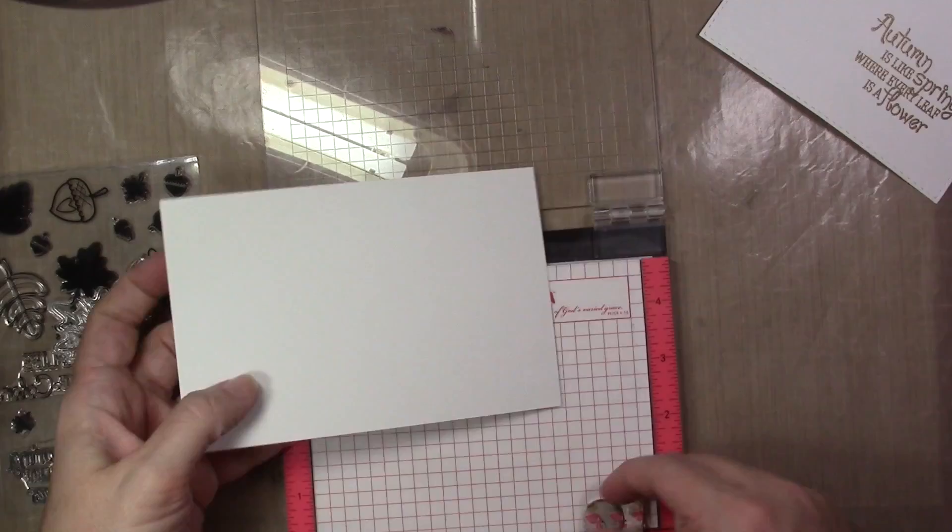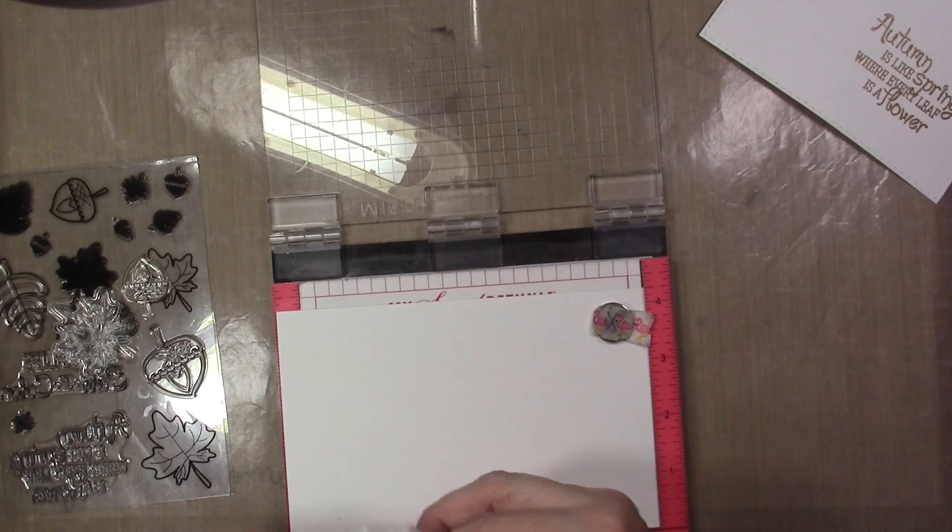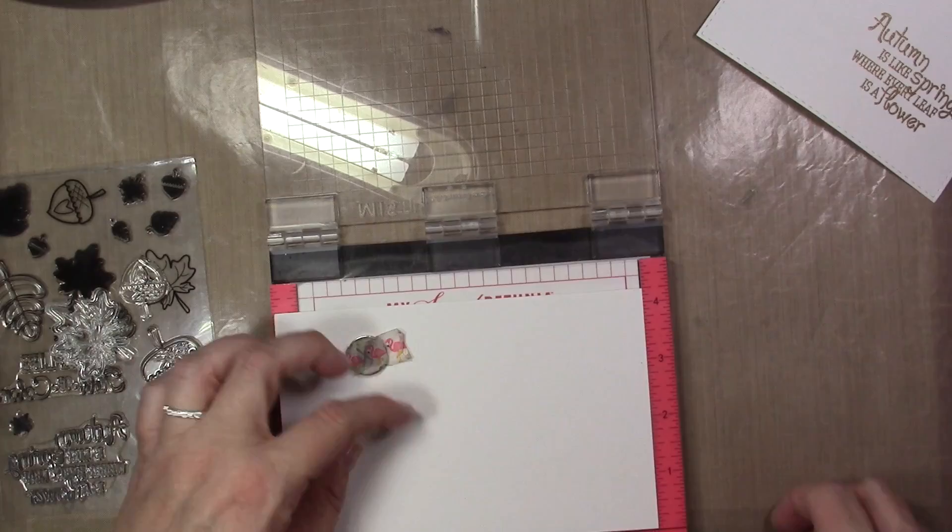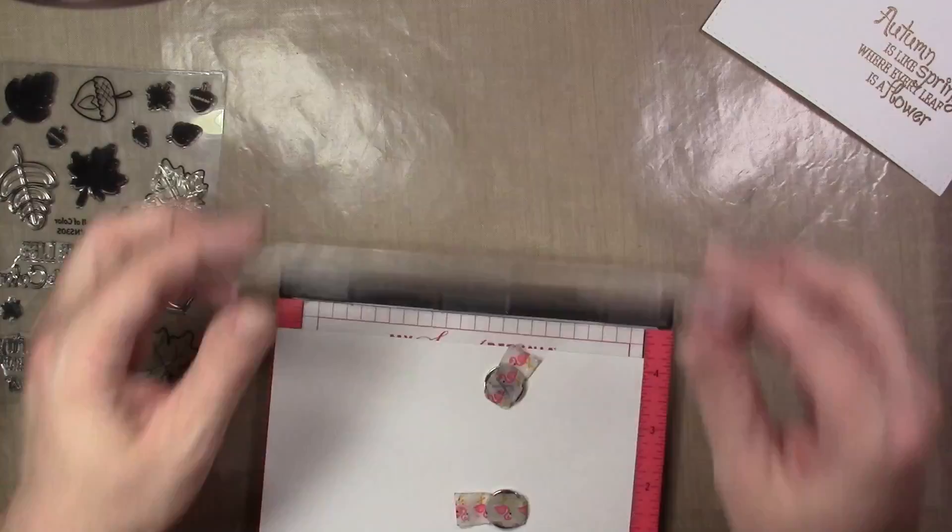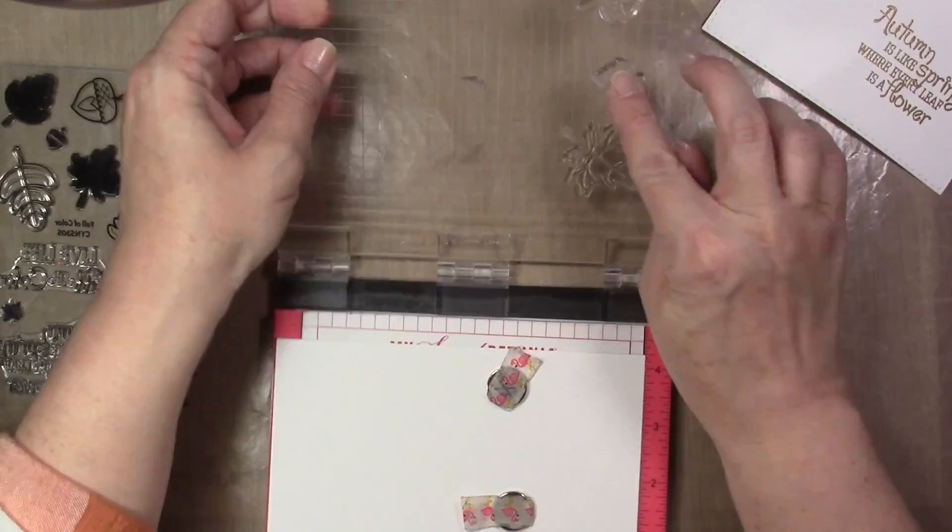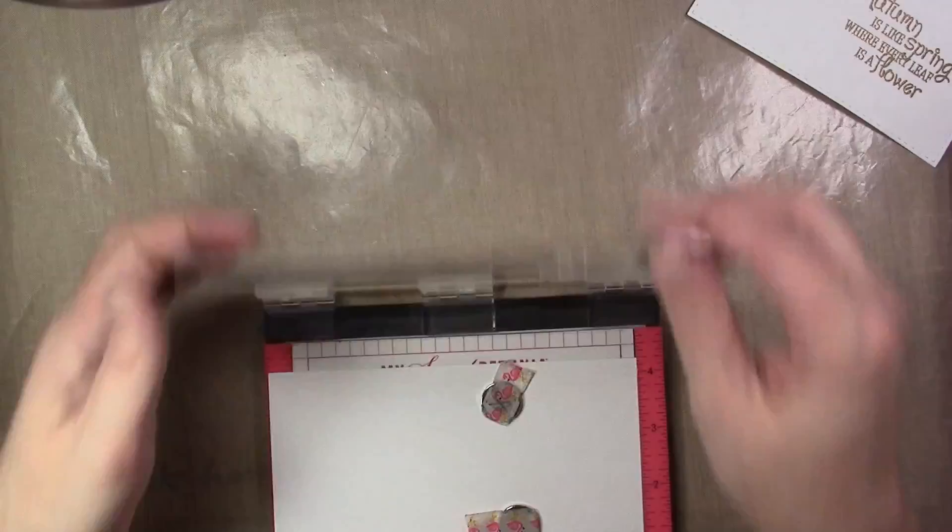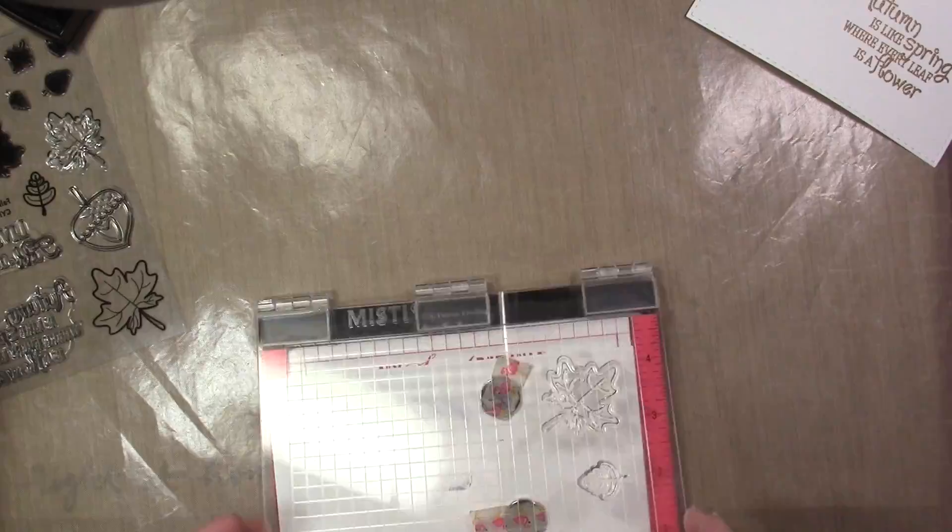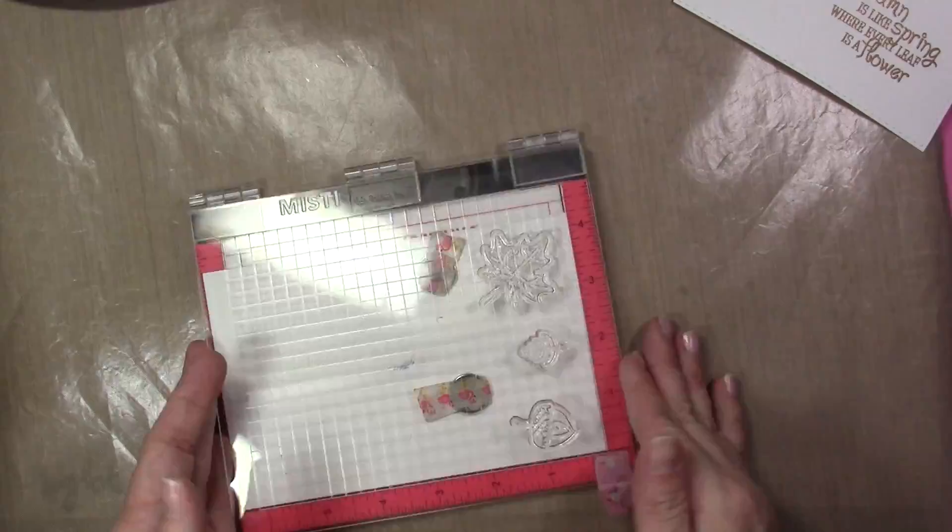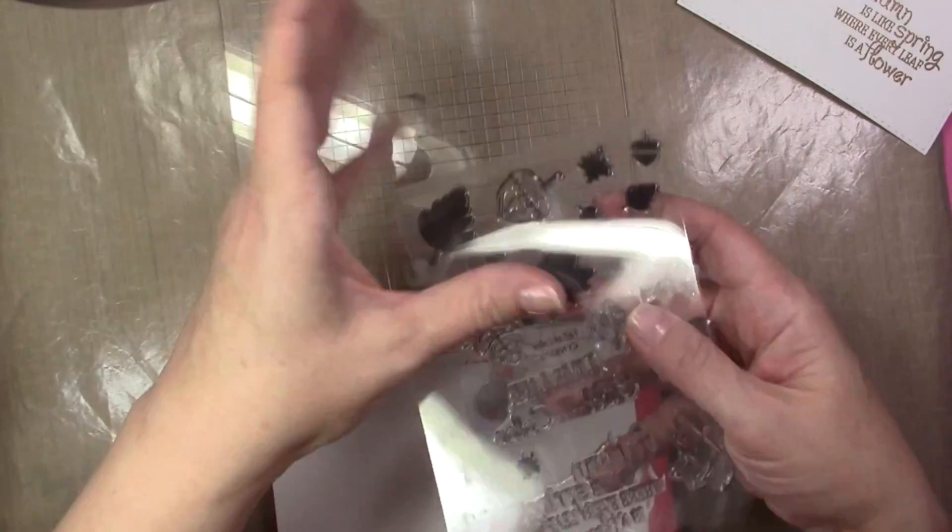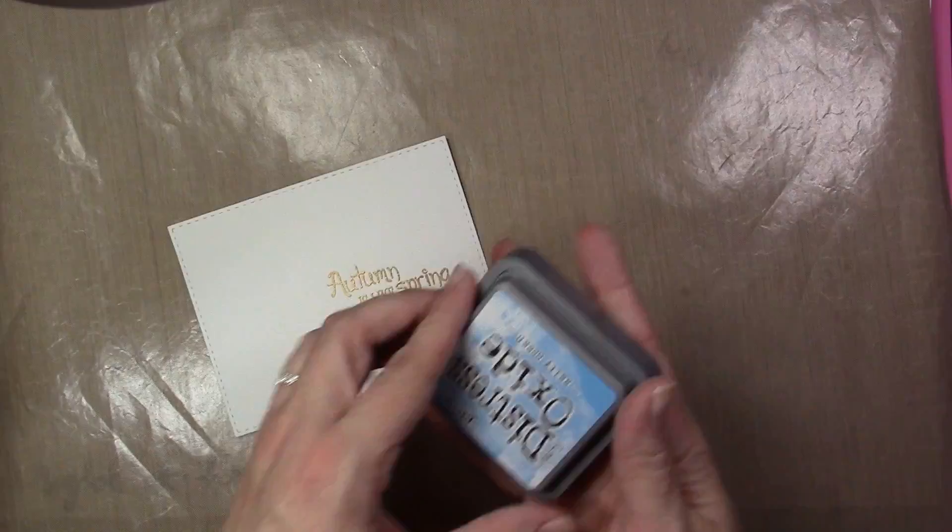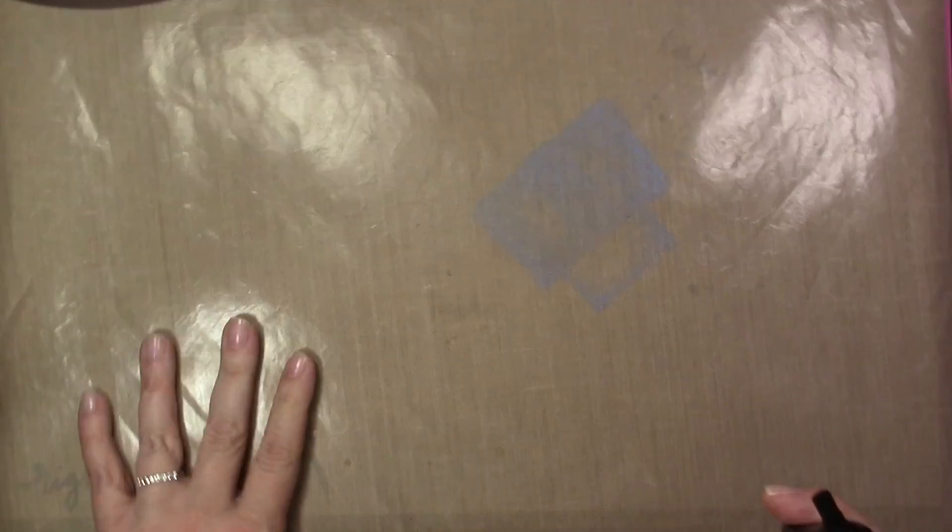I'm going to add an additional piece of Bristol cardstock into the mini MISTI and do the same thing with the anti-static powder bag. I'm going to stamp two of the leaves and the acorn image from the stamp set with the Versamark and then heat set them with the same gold embossing powder. Now that everything's all heat set, I'm going to start working on my coloring.